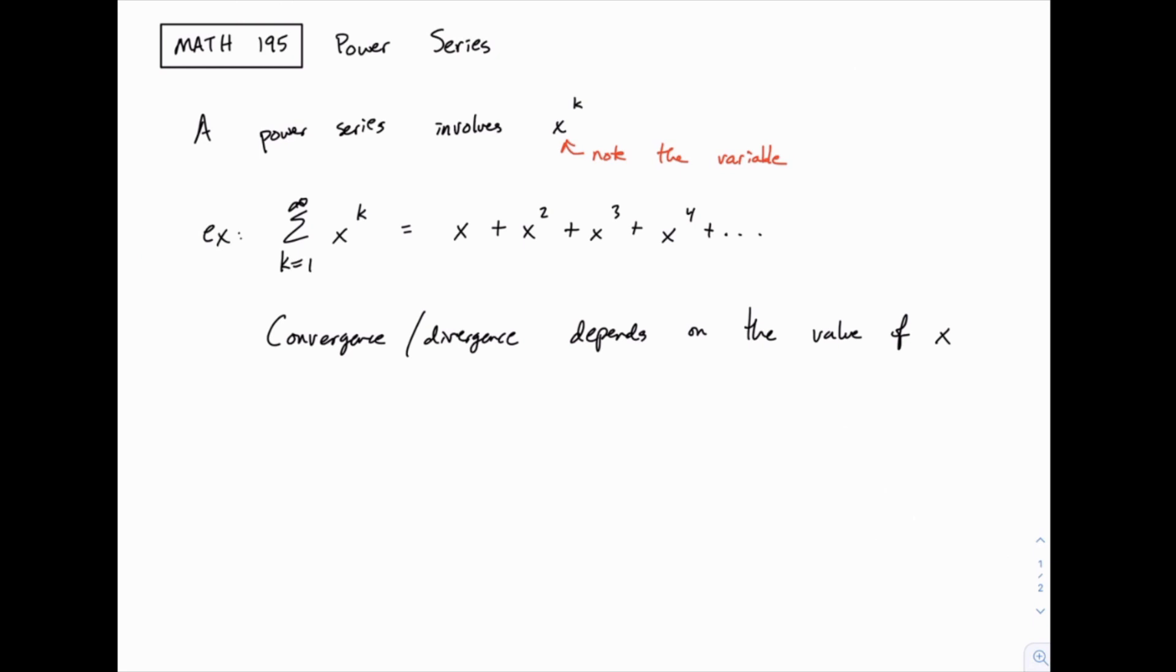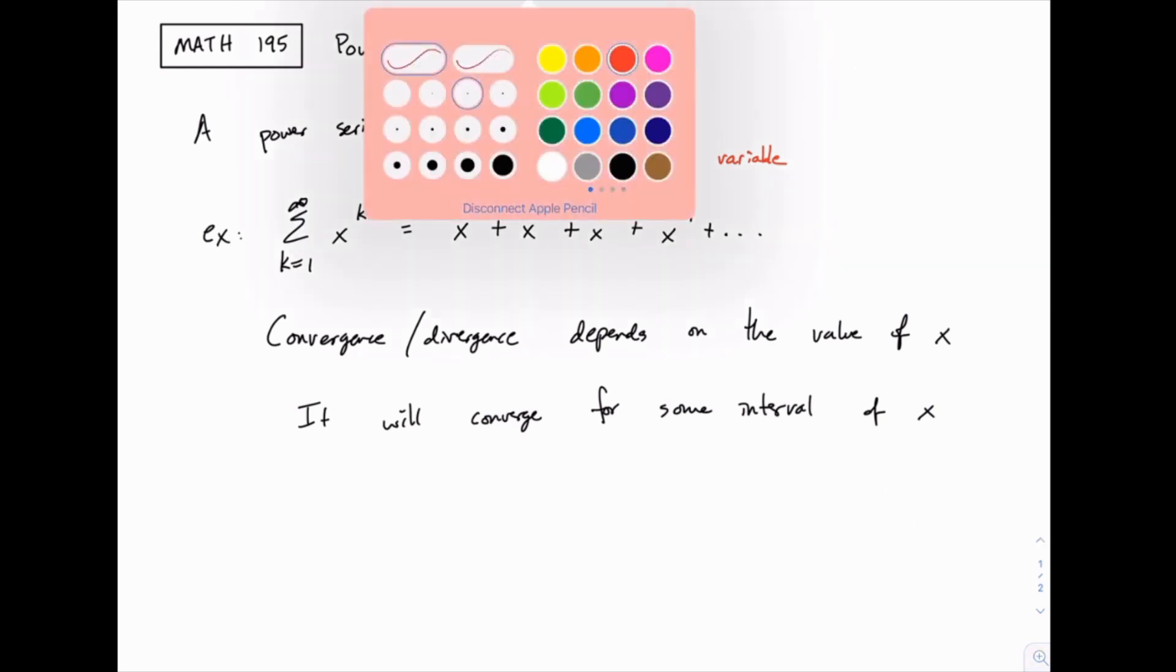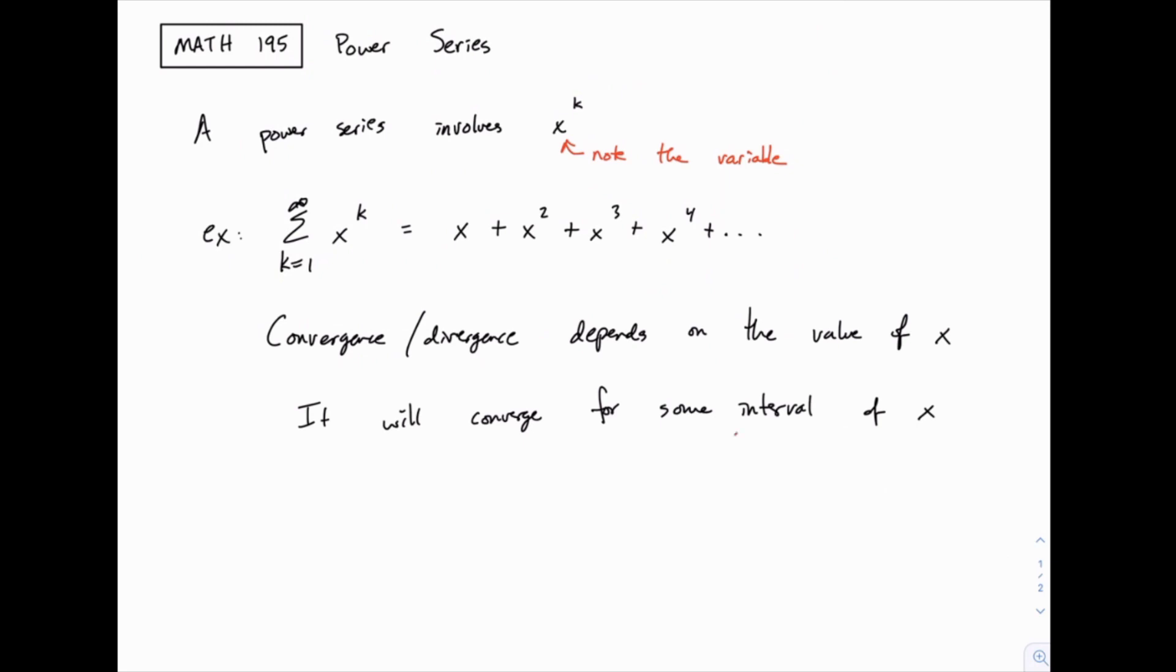Let me introduce some terminology. When we find the values of x that make this series converge, we will discover that a series will converge for values in some interval. In other words, there will be a range of values that fall into a specific interval, and that interval will make the series converge. We call this interval the interval of convergence.